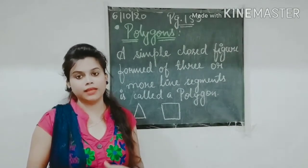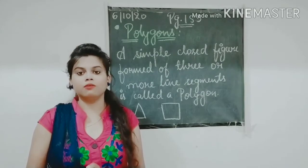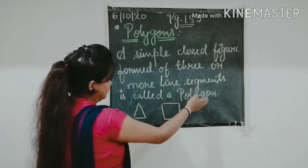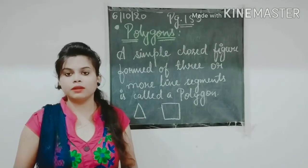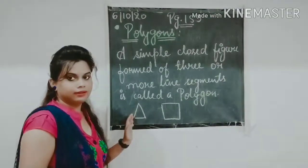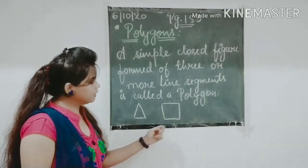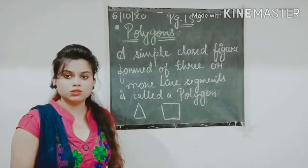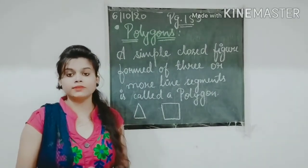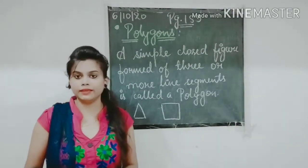A figure which does not intersect itself is called a simple closed figure. A simple closed figure formed of three or more line segments is called a polygon. For example, a triangle is made up of three line segments, and any closed figure made up of three or more line segments is called a polygon.